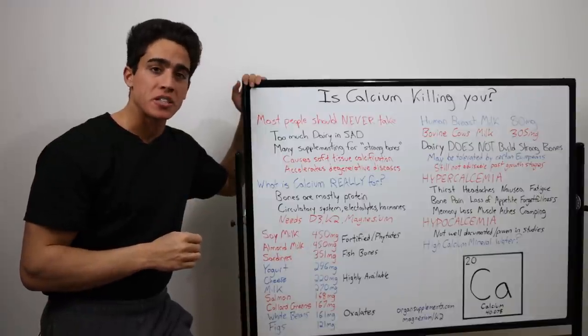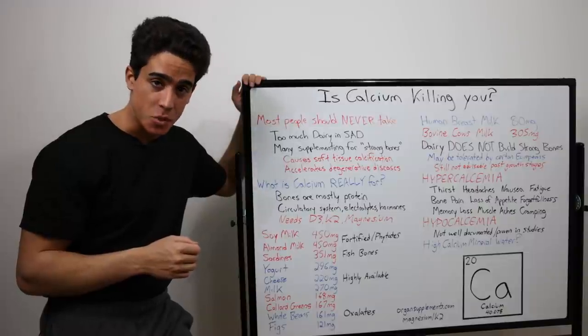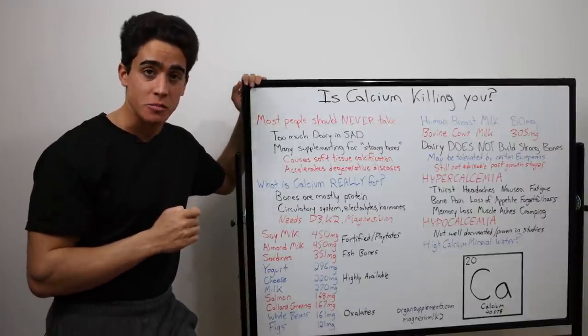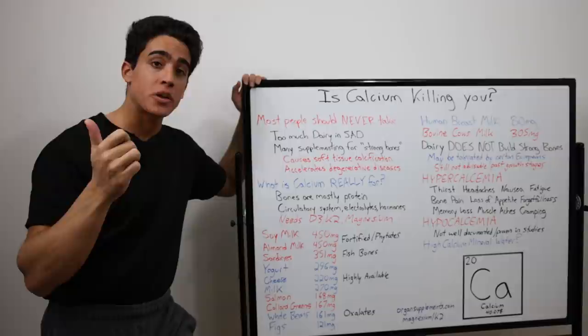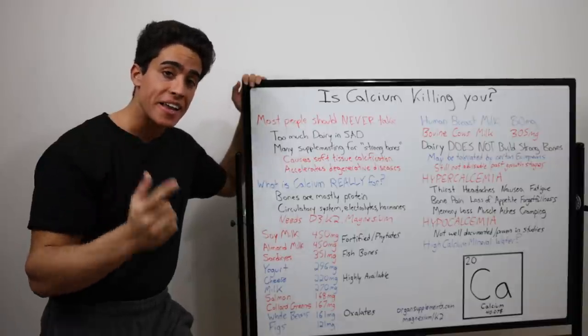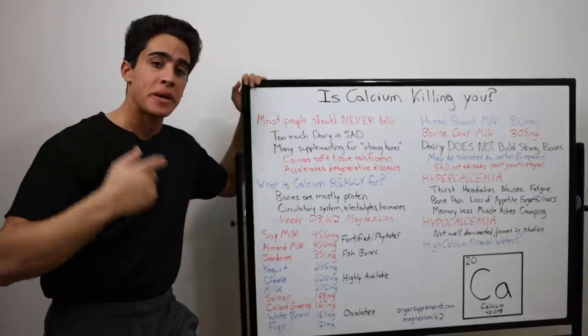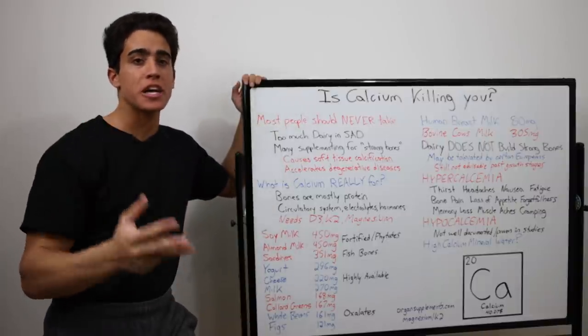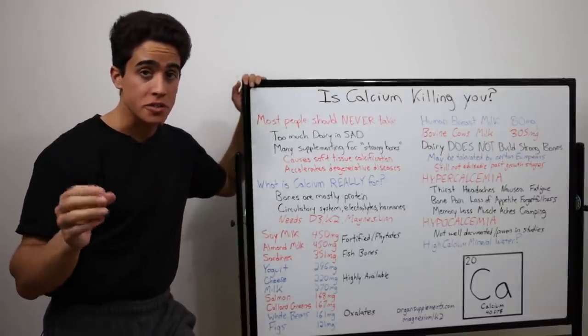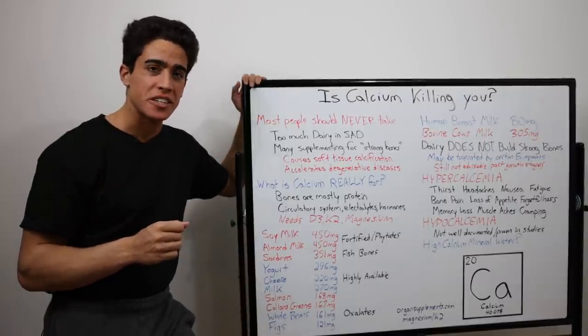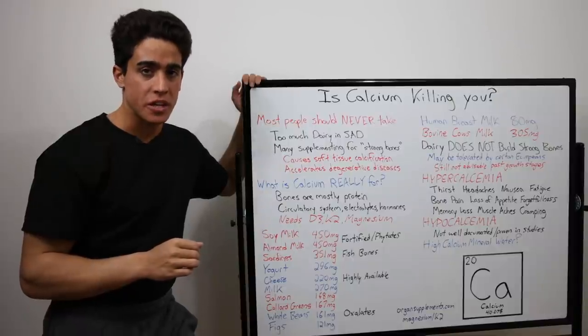Symptoms of hypercalcemia - calcium toxicity, calcium poisoning - are frequent urination and thirst, headaches, fatigue, bone pain, nausea, vomiting, constipation, decreased appetite, forgetfulness, memory loss, muscle aches and cramping. Of course, soft tissue calcification and bone spurs are possible, but no mainstream medical advice will tell you the truth.